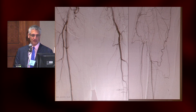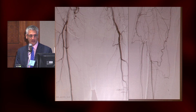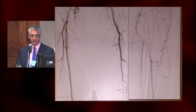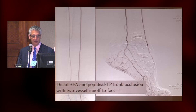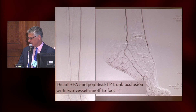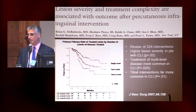Here's an example of a typical CLI patient. This patient presented on the right side — the SFA is open, but there's an occlusion above the knee, the entire popliteal artery is out, and then there's tibial disease as well going down the leg. So this is an SFA and popliteal TP trunk occlusion with some tibial disease — a pretty typical situation for a CLI patient. In fact, this is not easily addressed by the TASC system because it doesn't integrate the whole scheme.